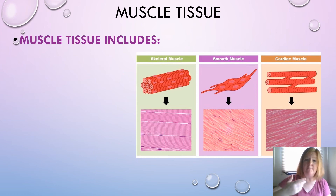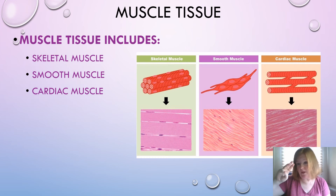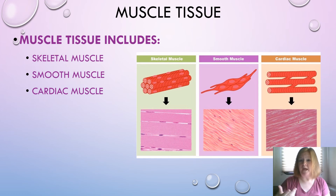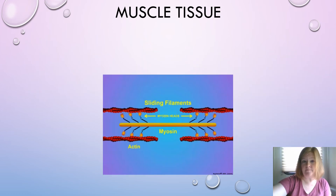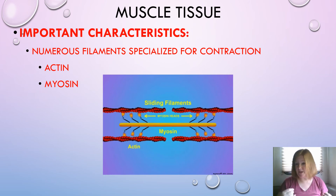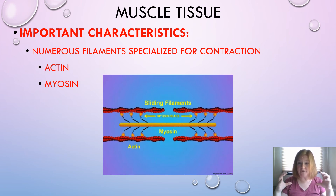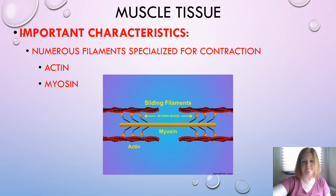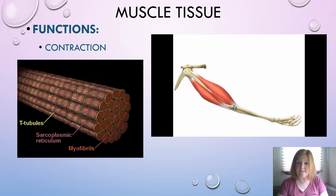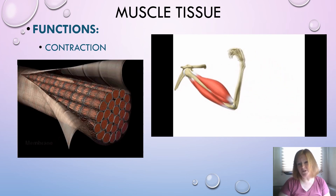Let's move on to muscle tissue. Muscle tissue includes three main types: skeletal, smooth, and cardiac. Skeletal is the only voluntary muscle; smooth and cardiac are both involuntary. Cardiac is found only in the heart, smooth lines most internal organs, and skeletal attaches to your bones. Muscle cells have many filaments specialized for contraction — actin and myosin work together to pull and help a muscle contract. The main function of muscle tissue, whether skeletal, cardiac, or smooth, is contraction.